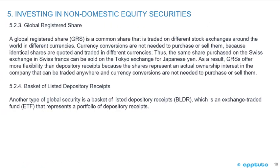Global registered shares (GRS) are not depository receipts — they are common shares traded on different stock exchanges around the world in different currencies. Currency conversions are not needed to purchase or sell them because identical shares are quoted and traded in different currencies. For example, shares purchased on the Swiss exchange in Swiss francs can be sold on the Tokyo exchange for Japanese yen. GRS offer more flexibility than depository receipts because they represent an actual ownership interest in the company.